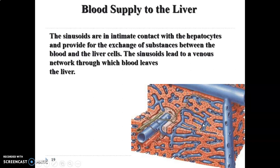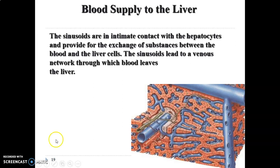The sinusoids eventually drain the blood to a venous network through which the blood now leaves the liver. As you can see, the sinusoids are emptying into the large veins in the liver.